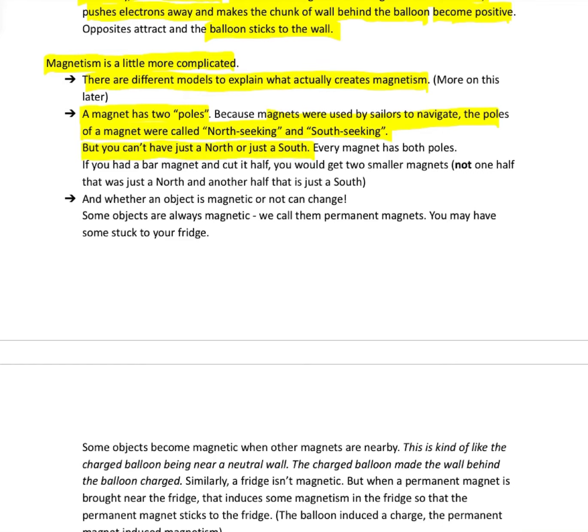A little bit more complicated than electricity. Electricity, you can have just a negative or a positive. But for magnetism, you can't have just a North or just a South. Every magnet, regardless of its shape or style, every magnet always has both poles. If you had like a simple bar magnet as a kid, or maybe still do. If you take a regular old bar magnet and cut it in half, you get two smaller magnets. Each one with a North and South. You don't get one half that's all North and one half that's all South. You just get two smaller versions of the thing you started off with.